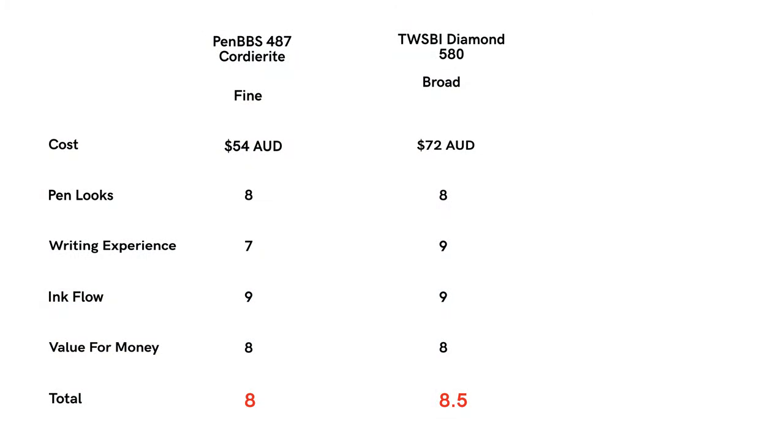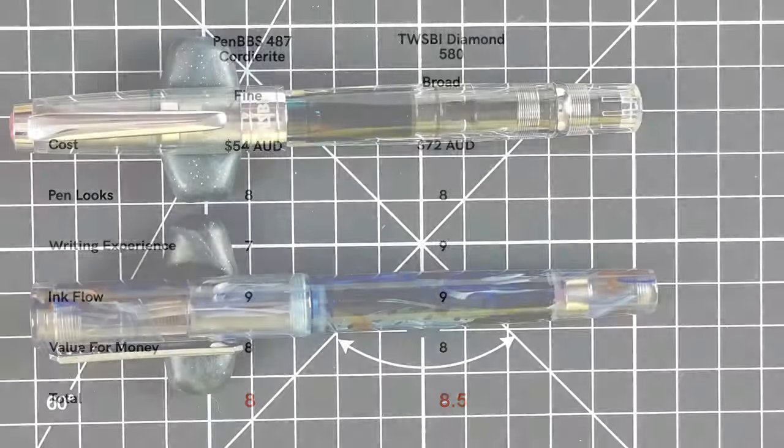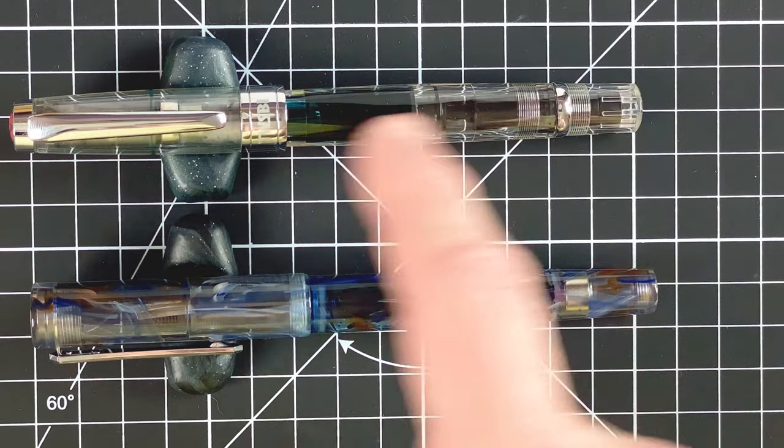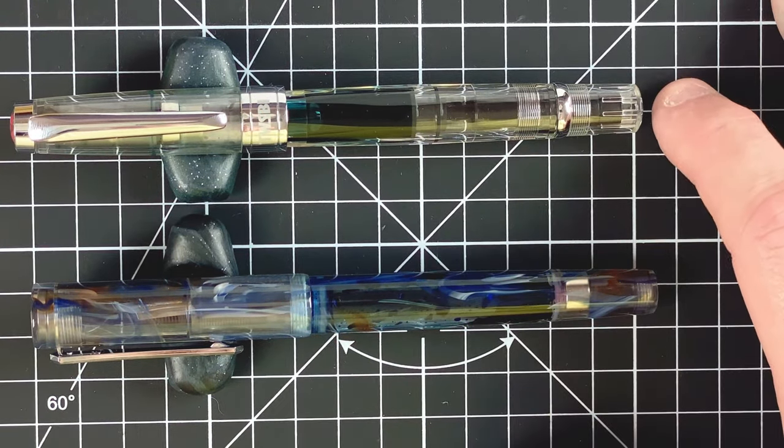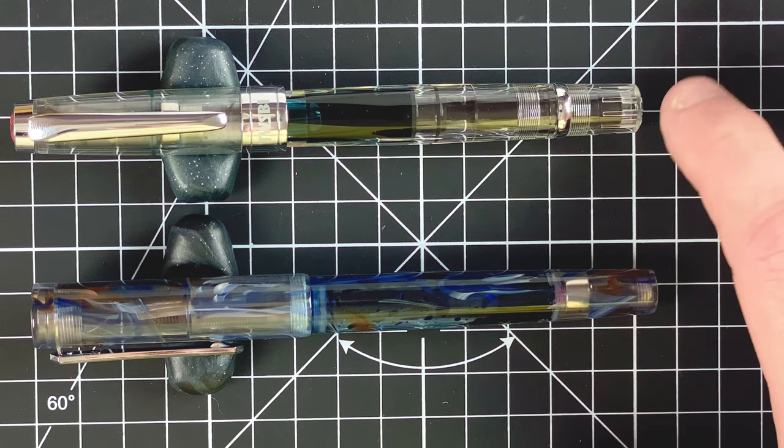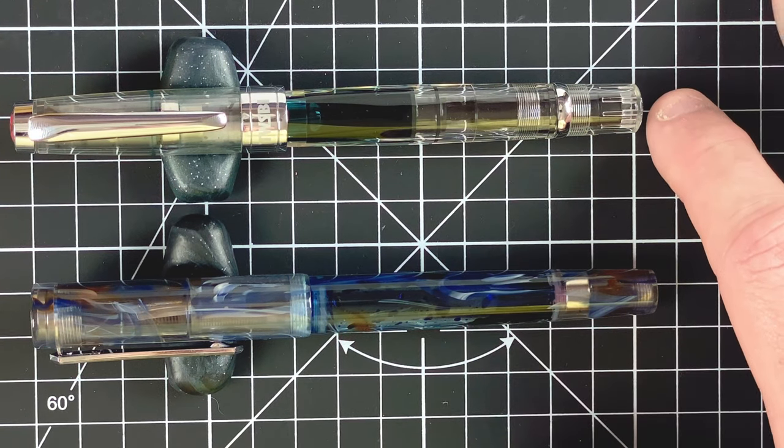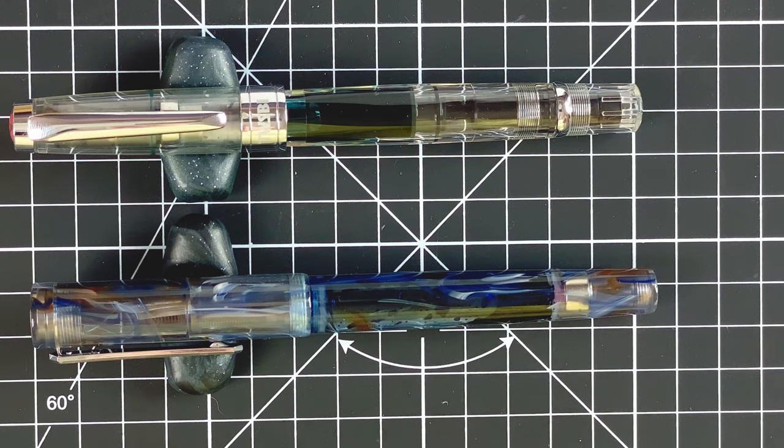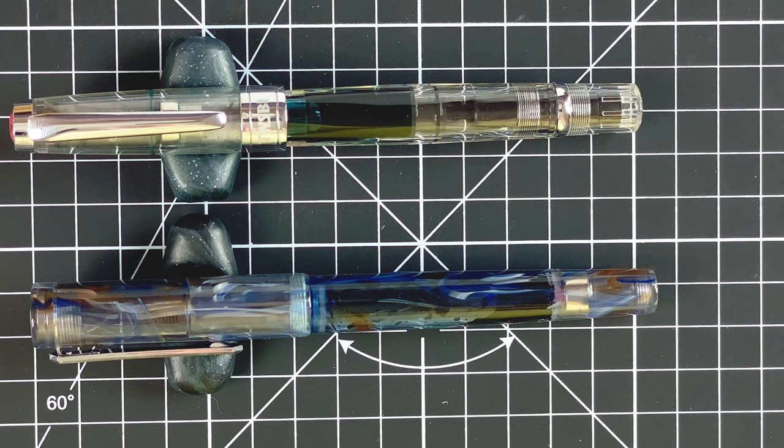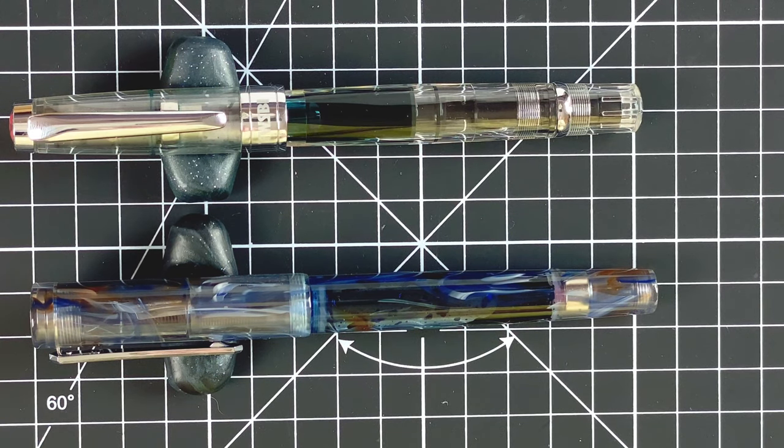So that gives me total scores. So averaging over the four for the 487, I come up with 8 out of 10. And for the Twisby, Diamond 580, I come up with 8.5 out of 10. As I've only had the broad nib in here for a few weeks. And as I said, the color is beautiful. I'm becoming that I've started to like using this one. But this 487, this is the pen that I love to write with. This is a pen that I would reach for out as a preference to any other. And I've normally got five or six pens laying around all inked up. And if I don't have the one that I'm forcing myself to use for that day, I'll reach for the 487 before any of the others.